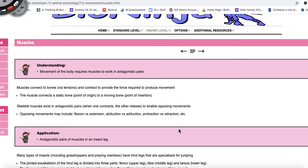Hello students. Today we are continuing with 11.2 and we're going to be looking at muscles. So let's start with the essential understanding, which says that movement of the body requires muscles to work in antagonistic pairs. So we're going to be looking at an example today of antagonistic pairs of muscles.